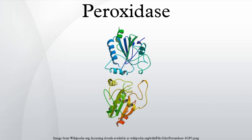Amyloid beta, when bound to heme, has been shown to have peroxidase activity. A typical group of peroxidases are the haloperoxidases. This group is able to form reactive halogen species and, as a result, natural organohalogen substances.